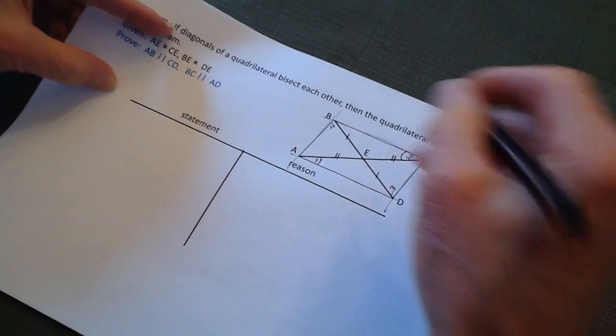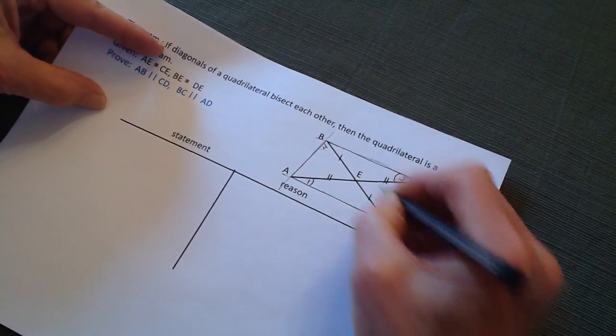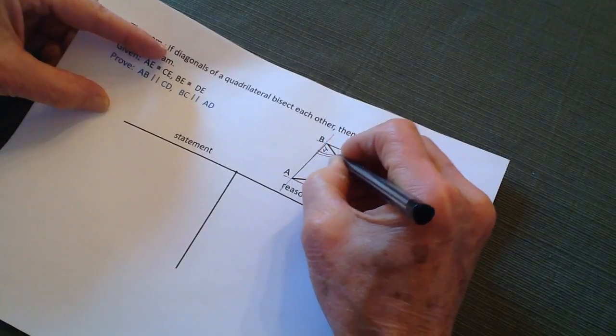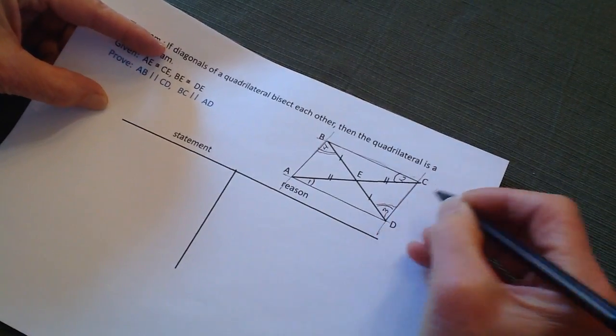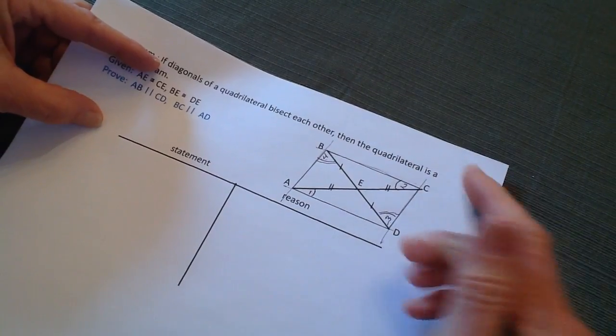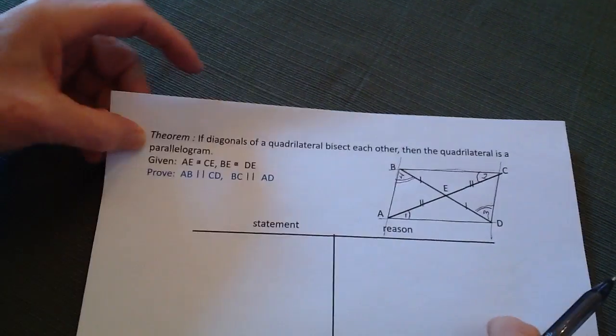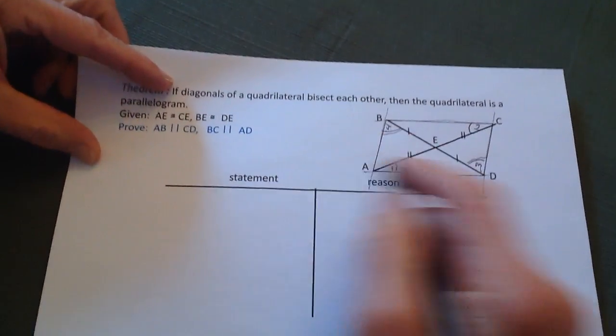So in order to do that, what I'm going to have to do is find this triangle to be congruent to that triangle, and this triangle to be congruent to that triangle. That's going to be the challenge of being able to do this.